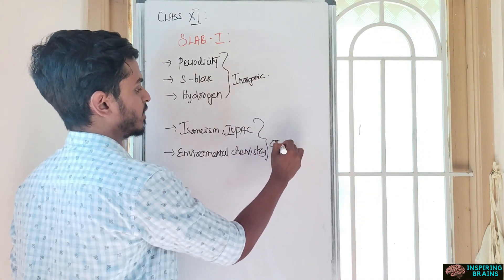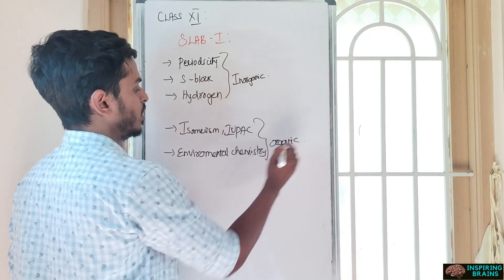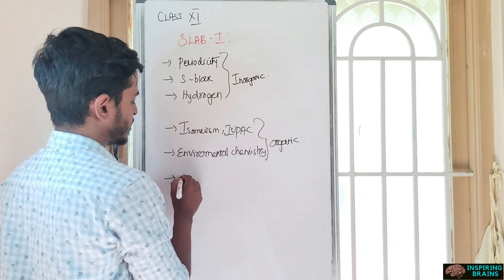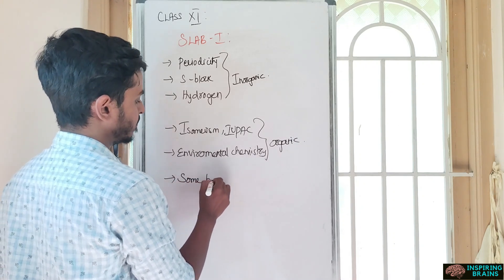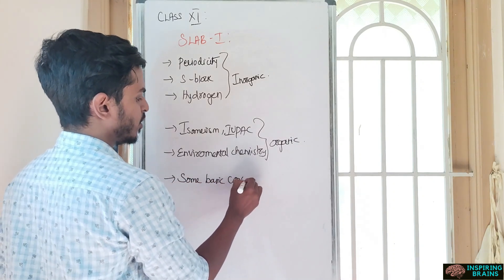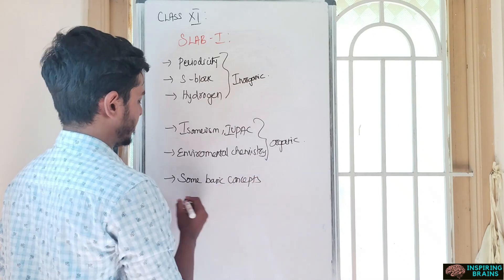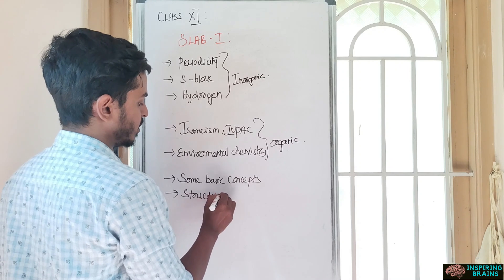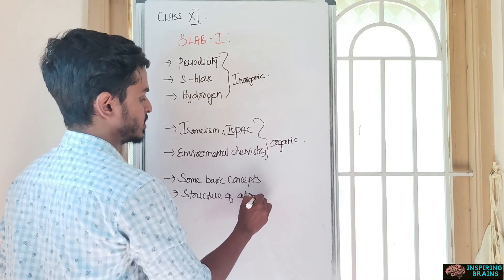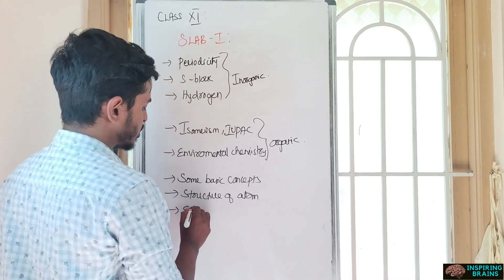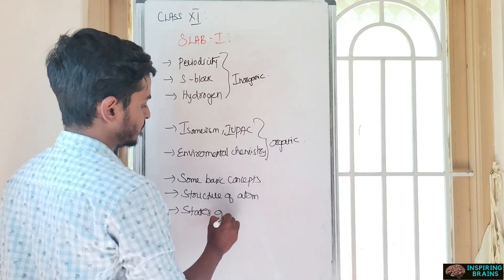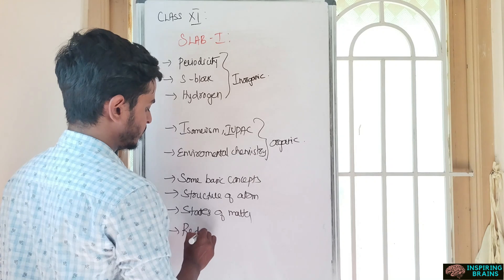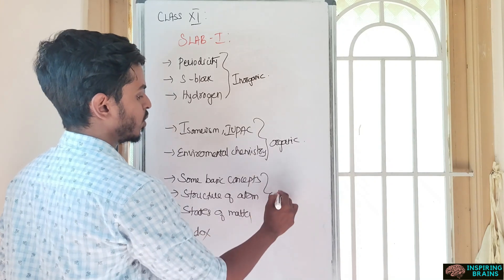Physical - again some basic concepts of chemistry, because everybody will know this, it's 11th first chapter. Structure of atom, since we'll be studying in both physics and chemistry. Then states of matter, don't leave this unit. And finally redox. These are all physical.